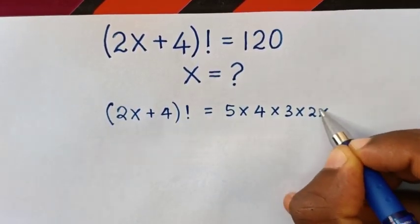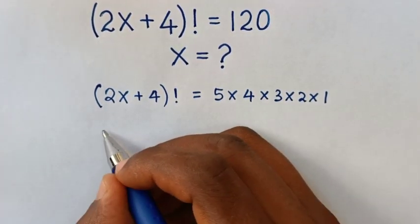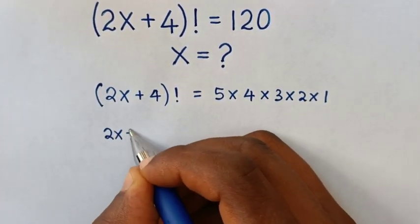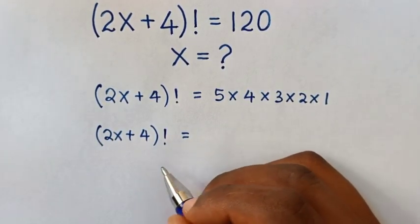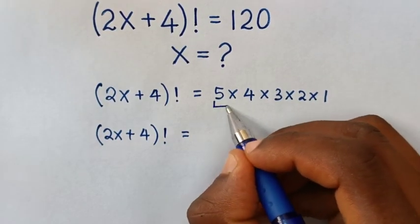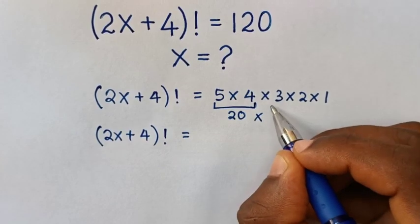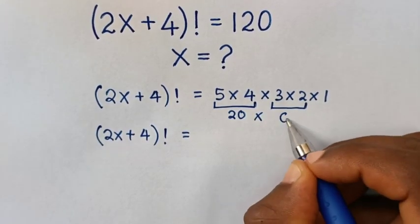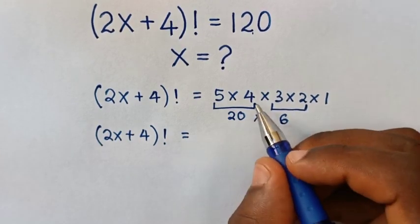Then our equation will be (2x + 4)! equal to... to check this multiplication, 5 times 4 is 20, then times 3 times 2 is 6, so 20 times 6 is 120. Therefore, multiplication of this is the same as 5 factorial.